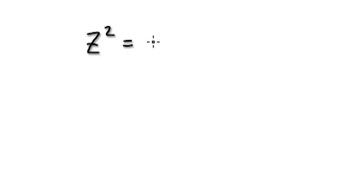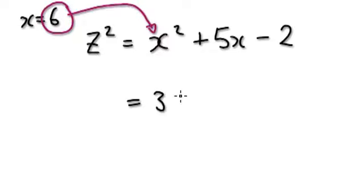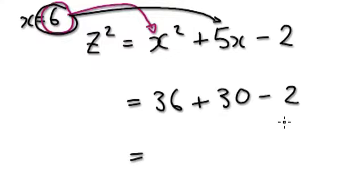Let me give you an example. Let's say z squared equals x squared plus 5x minus 2, and x equals 6. So let's put 6 into the x: that would be 36 plus — 6 into 5x would be 30 — and then take away 2. So that's 66 take away 2, which would be 64.